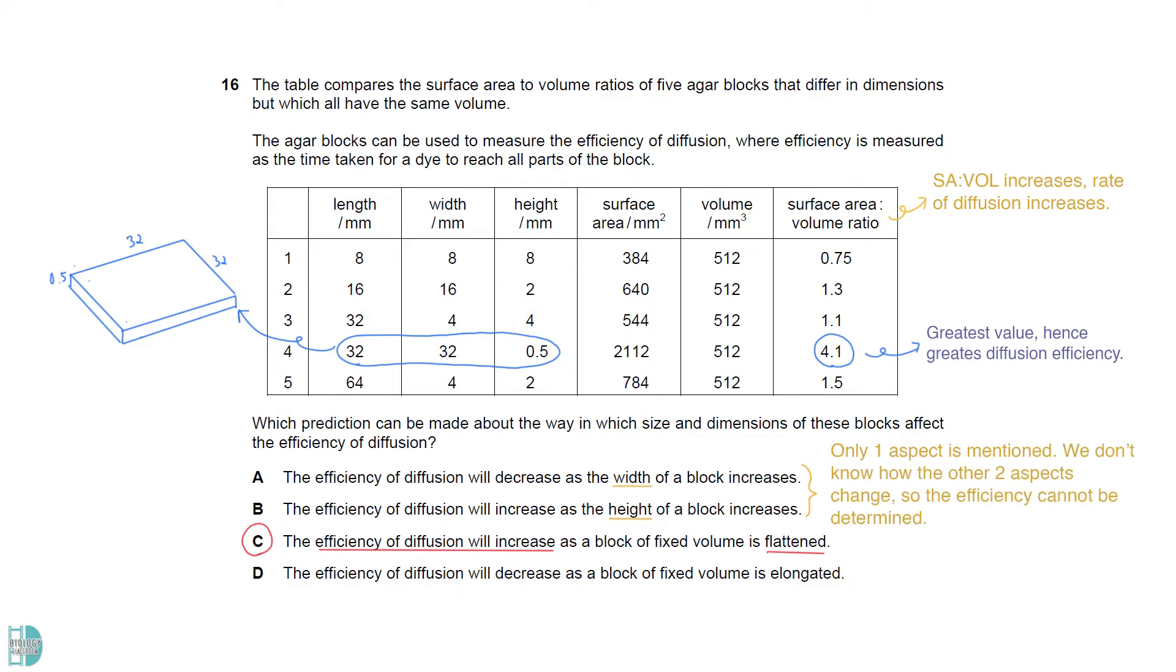A and B are wrong because they mention the change of only one aspect. Without knowing the other two, there is no way to know the total surface area to volume ratio. With that said, we can't possibly say how it affects the rate of diffusion. C is wrong because, as a block of fixed volume is elongated, its surface area to volume ratio would increase. It leads to an increase in the rate of diffusion.